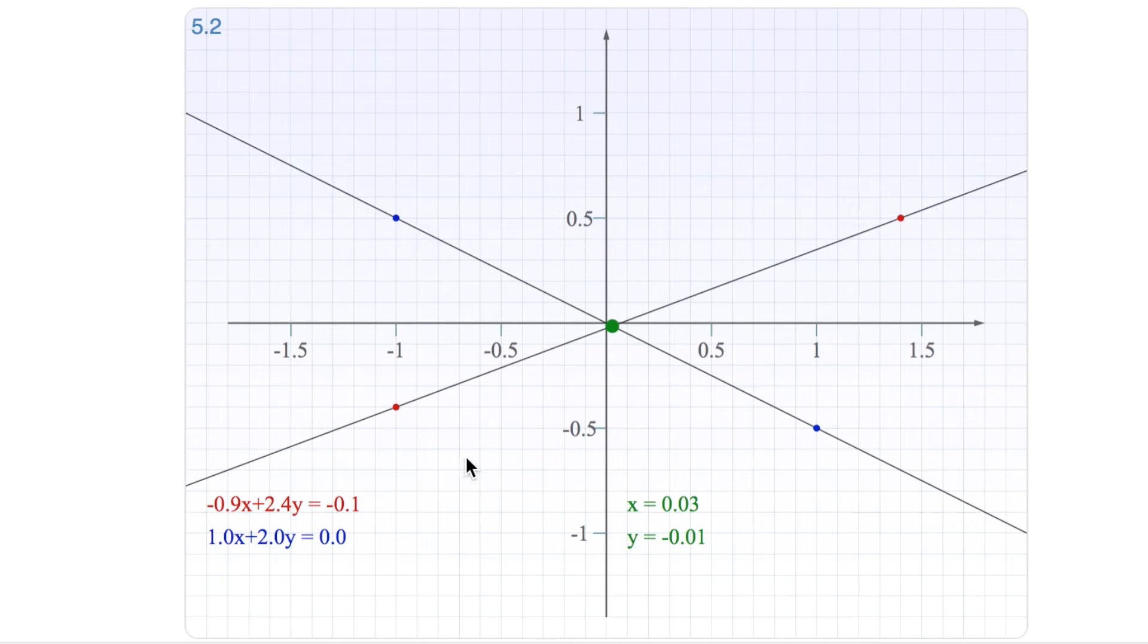So you can play around with this. If you move the lines, which you do by dragging these red dots and blue dots, you can make this solution be anywhere. For instance, in the middle here, you just move it like this, and then you get the solution 0, 0.